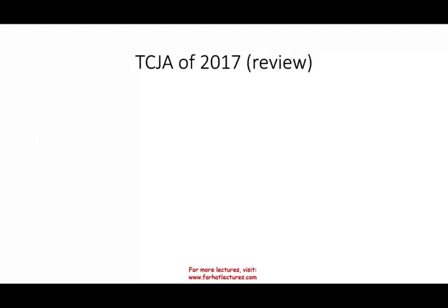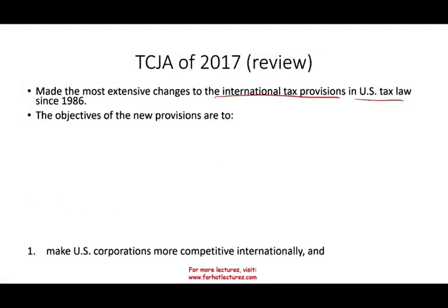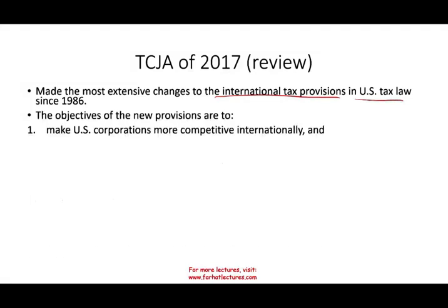The Tax Cuts and Jobs Act of 2017 made the most extensive changes to international tax provisions in U.S. tax law since 1986. The objective was to make U.S. corporations more competitive internationally and to prevent erosion of the U.S. tax base.